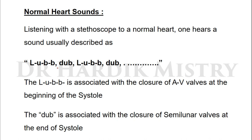Listening with a stethoscope to a normal heart, one hears the sound usually described as 'lup-dub, lup-dub.' The 'lup' is associated with the closure of atrioventricular valves at the beginning of systole. The 'dub' is associated with the closure of semilunar valves at the end of systole.